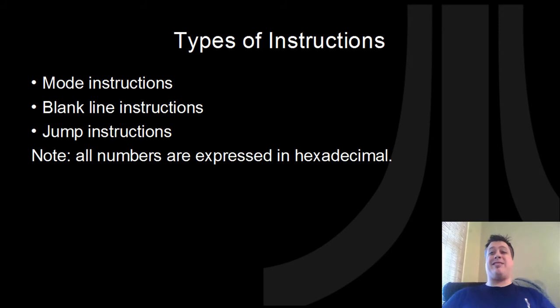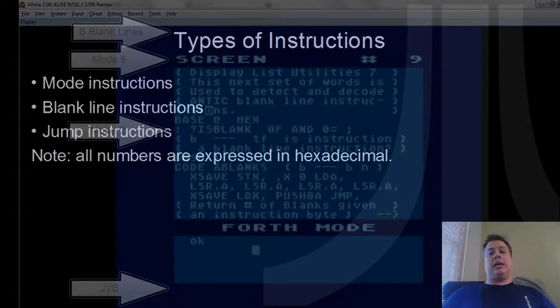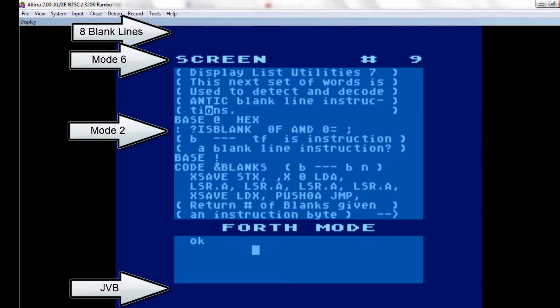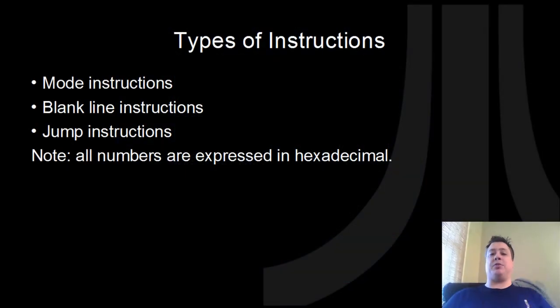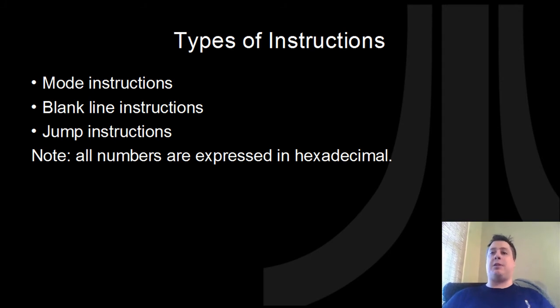What types of instructions do we have? We have mode instructions, which specify which mode to display on each line. We have blank line instructions, which say to display from one to eight scan lines. And we have jump instructions, which basically say to jump to another location in memory. From this point on, all numbers we talk about here, for the sake of convenience, are expressed in hexadecimal.